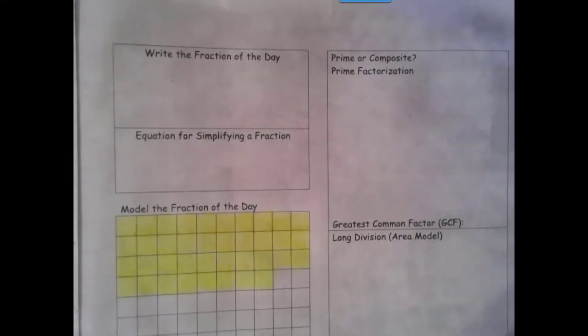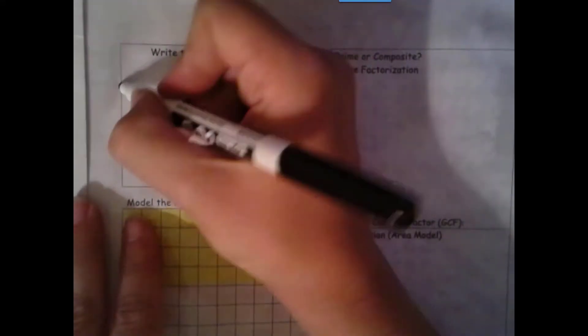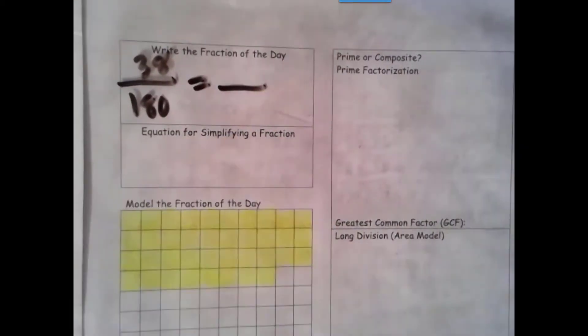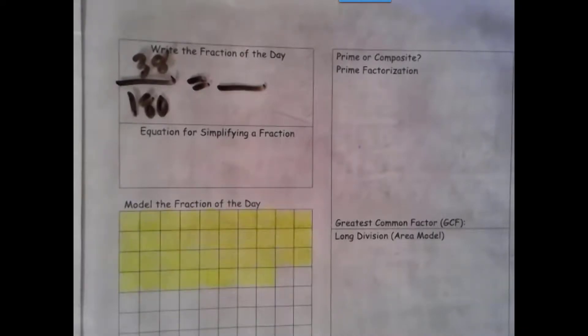Our denominator is 180 because that's our total amount of school days, and we're on day 38. So let's see our numerator.